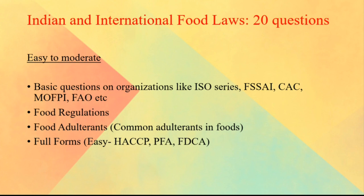Questions on food adulterants were slightly easy — for example, which substance is used to adulterate coffee — and anyone could attempt these based on general understanding. A number of questions were also on full forms, which are really very important. Full forms like HACCP, PFA, FDCA, and many more were asked in the exam.